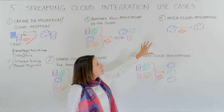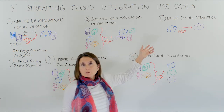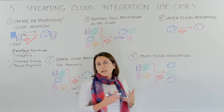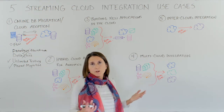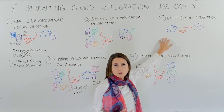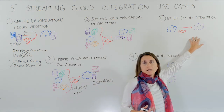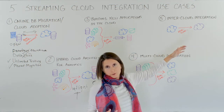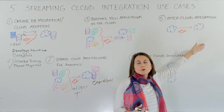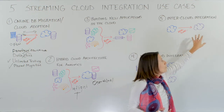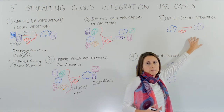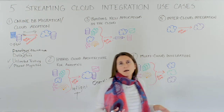The fifth use case is also multi-cloud but focused on connecting different cloud vendors with each other. If you have an operational database in one cloud and an analytics solution in another cloud, you need to move data between them in real time so you can have operational analytics in that cloud environment.